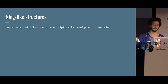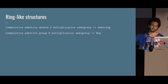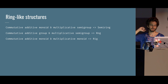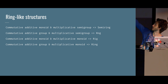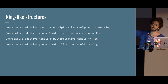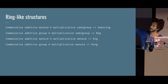A semi-ring is a commutative additive monoid glued together with a multiplicative semigroup. If we turn the additive monoid into a group, we get a rung — a ring without the i, without identity. If we turn the multiplicative semigroup into a multiplicative monoid, we get a rig — a ring without the n, without negation. If we have a commutative additive group and a multiplicative monoid, we get a ring. And if both are groups, we get a field.